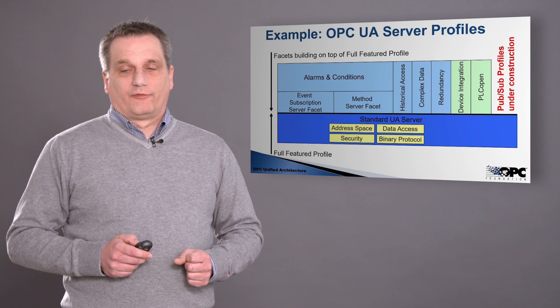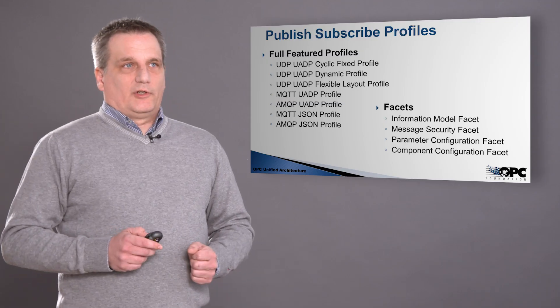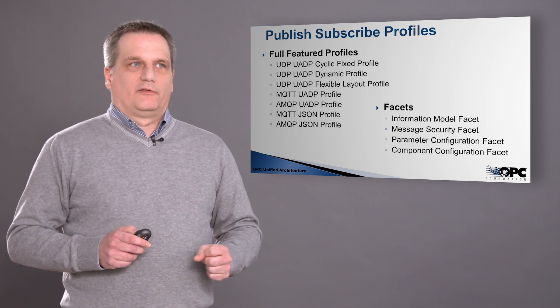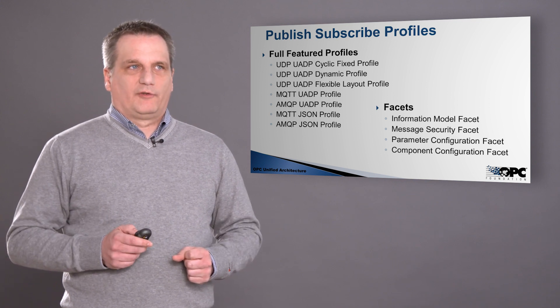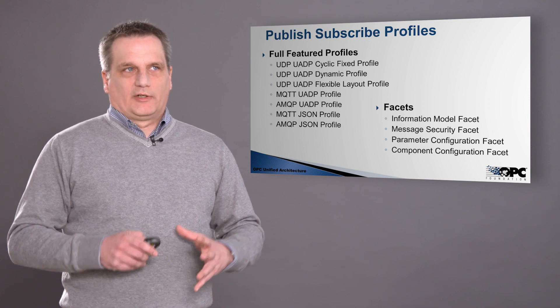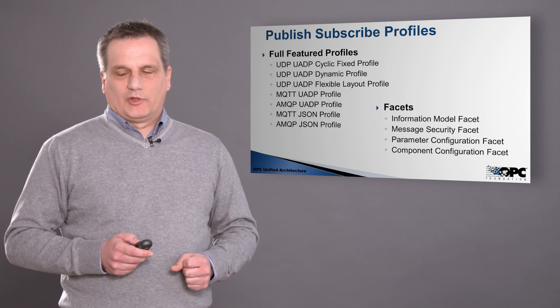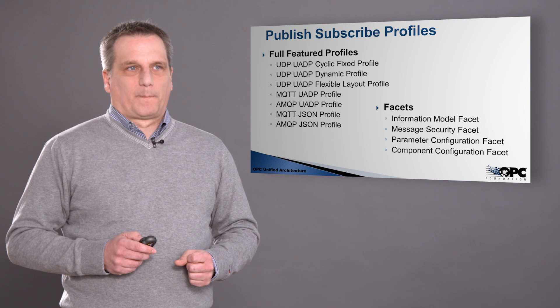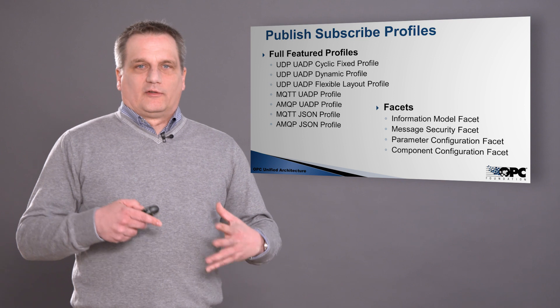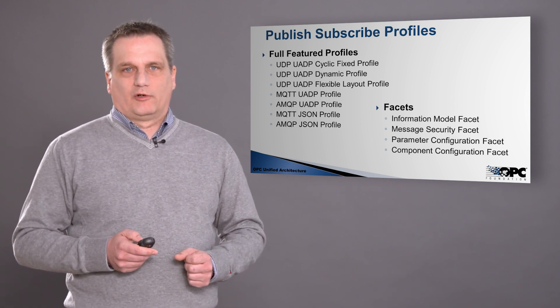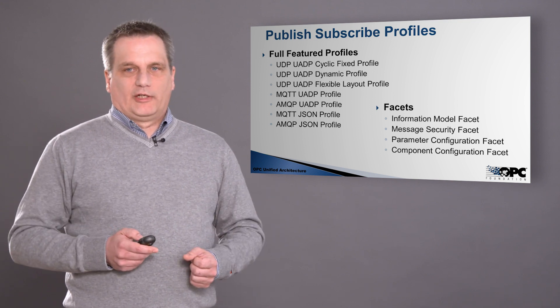There will be profiles for the pub/sub communication as well. We have a list of published/subscribed profiles. There are full featured profiles that describe the encoding and the transport — for the cyclic fixed profile, the dynamic profile, and the flexible layout profile that describes how the messages are put together and sent. We also have profiles for communication over MQTT, AMQP, and even a JSON encoding profile. In addition, the information model facet describes the pub/sub configuration that resides inside the information model of the server, and we have parameter configuration facets and component configuration so you can configure the pub/sub messages through the information model of the OPC server.